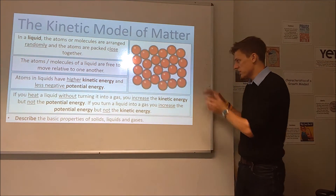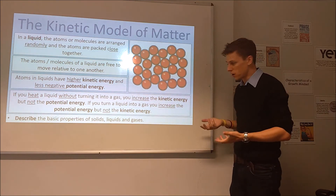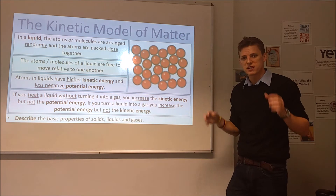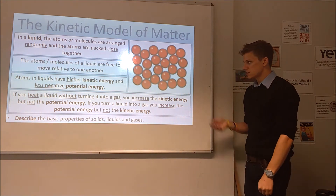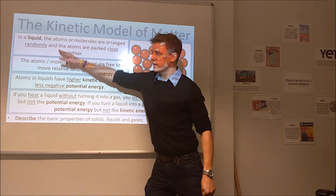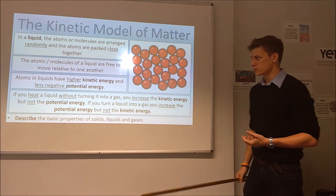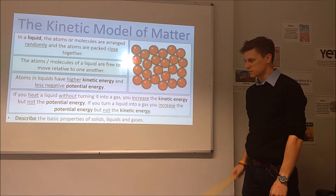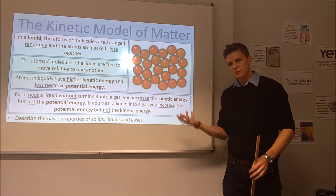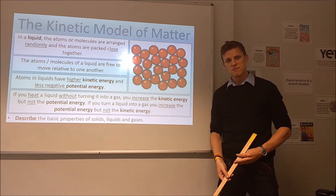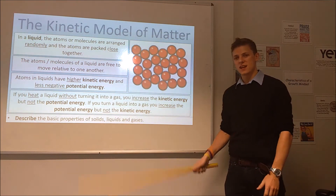Looking at a liquid, we can see straight away that the particles are still fairly closely packed together, so the distance isn't getting much bigger when we change to a liquid. But the pattern of arrangement is much less regular — they're what's called randomly arranged, and they're free to move around relative to one another. So the characteristics of a liquid are a random arrangement of atoms or molecules, still packed close together but not quite as closely packed as in a solid. Because they can move around, these particles are going to have more kinetic energy than in a solid.